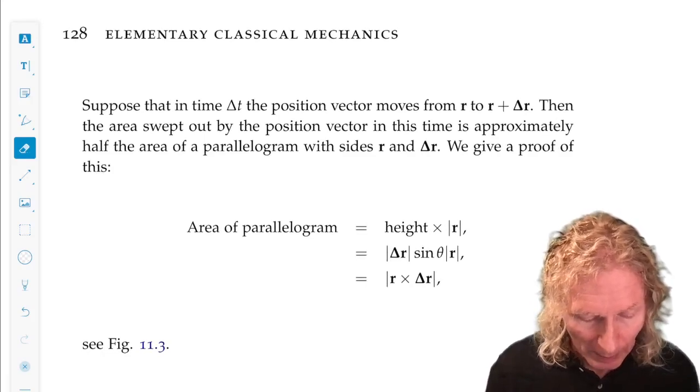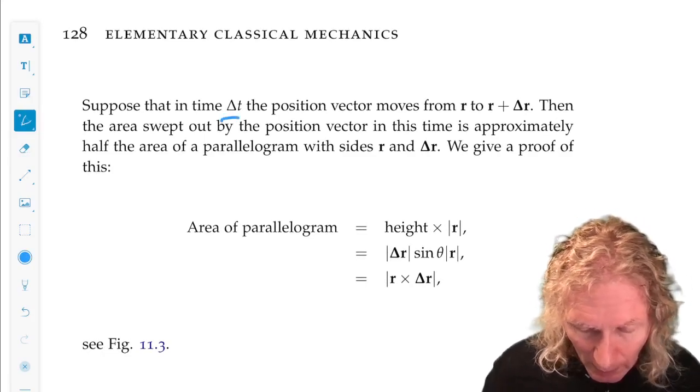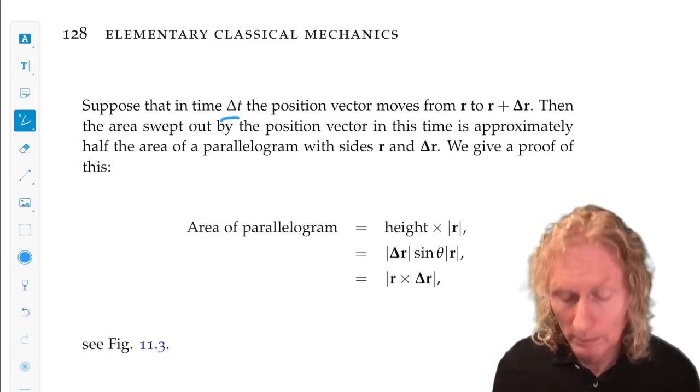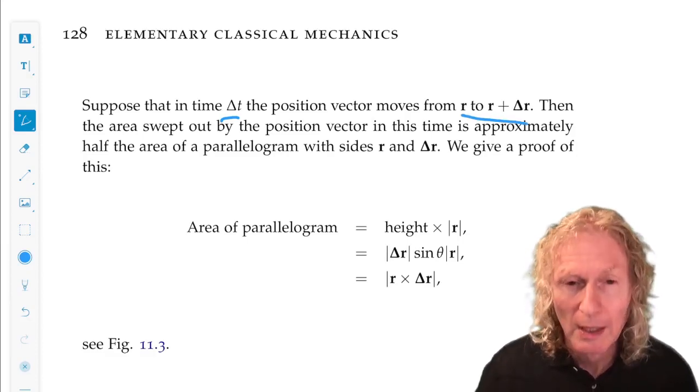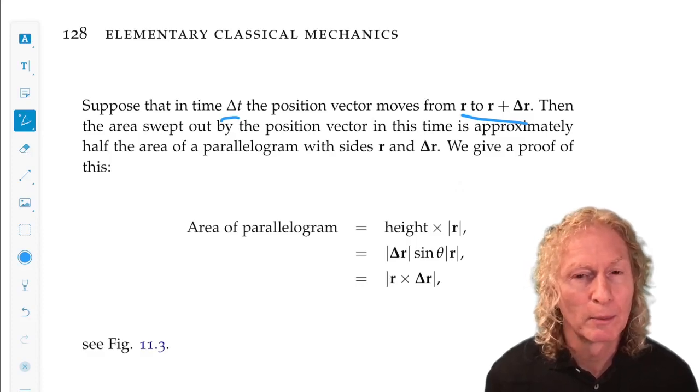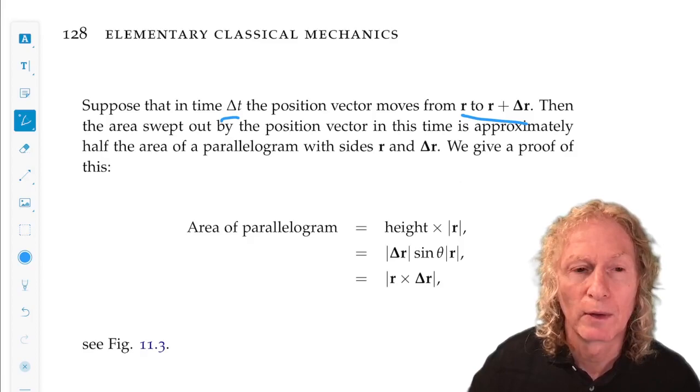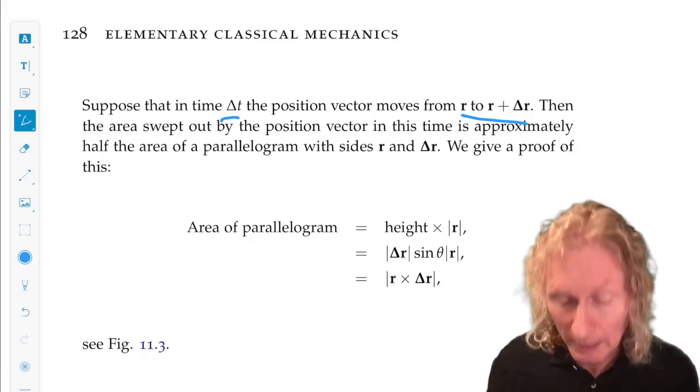Suppose that in time Δt, the position vector moves from r to r + Δr. Then the area swept out by that position vector as it moves is half the area of the parallelogram with sides r and Δr.